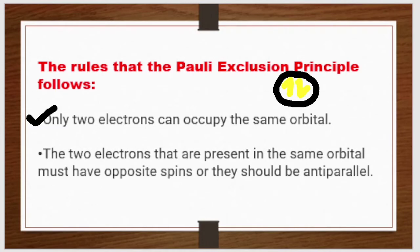The second rule says that the two electrons present in the same orbital must have opposite spin. Both electrons should be spinning in opposite directions. It should not be the same direction — that would be wrong.